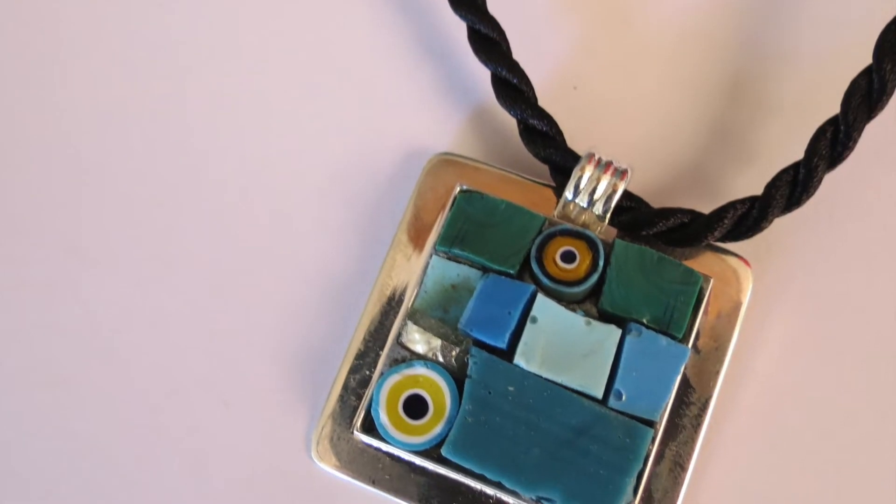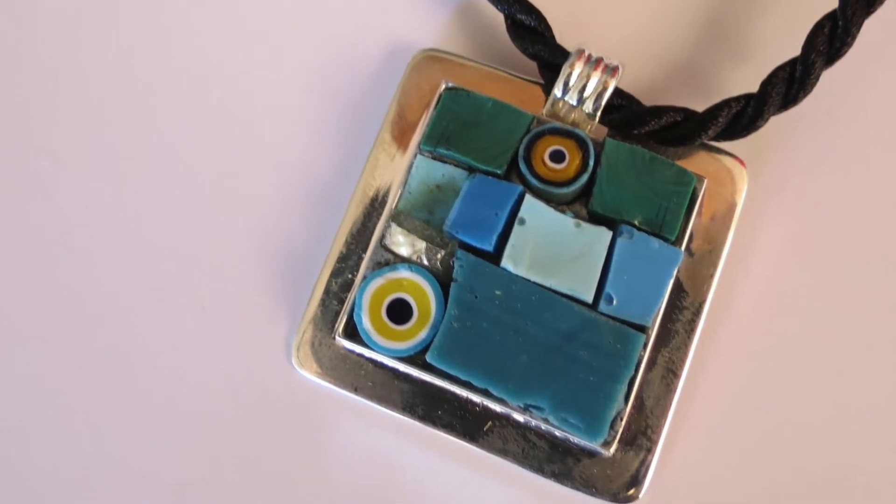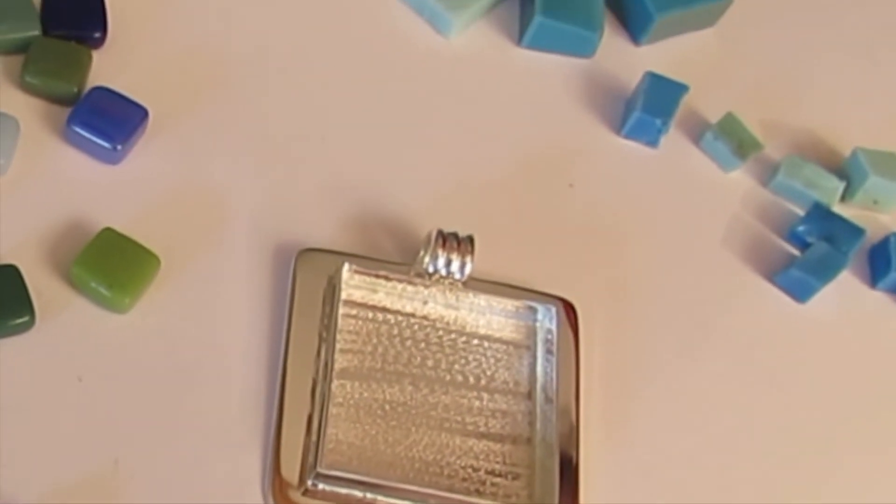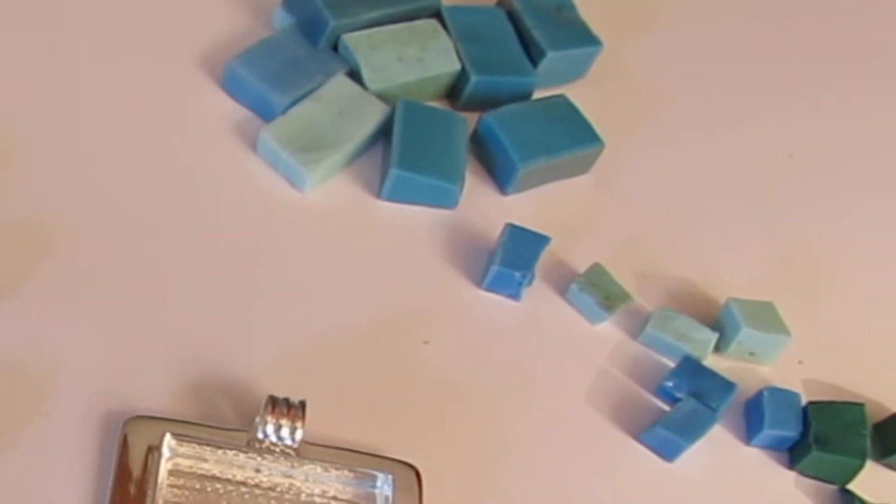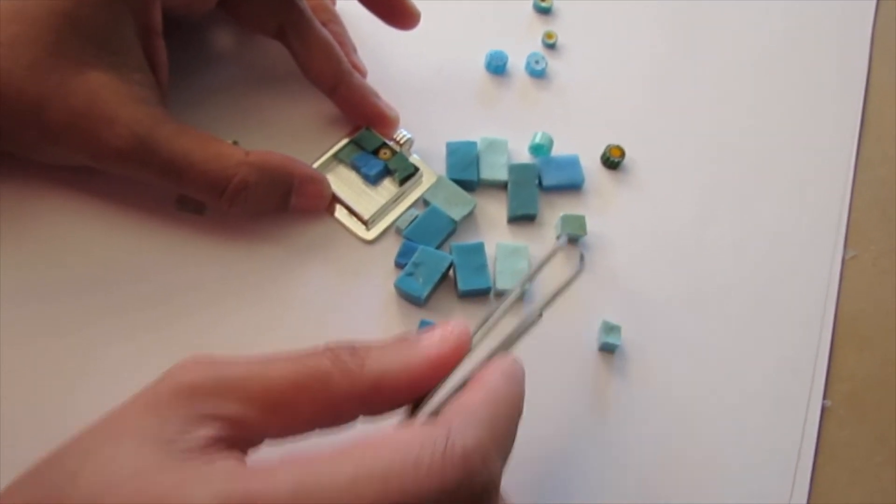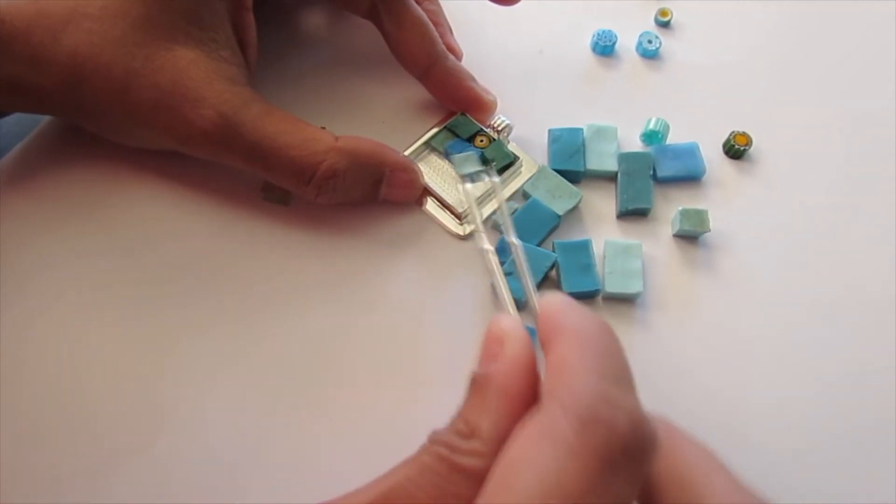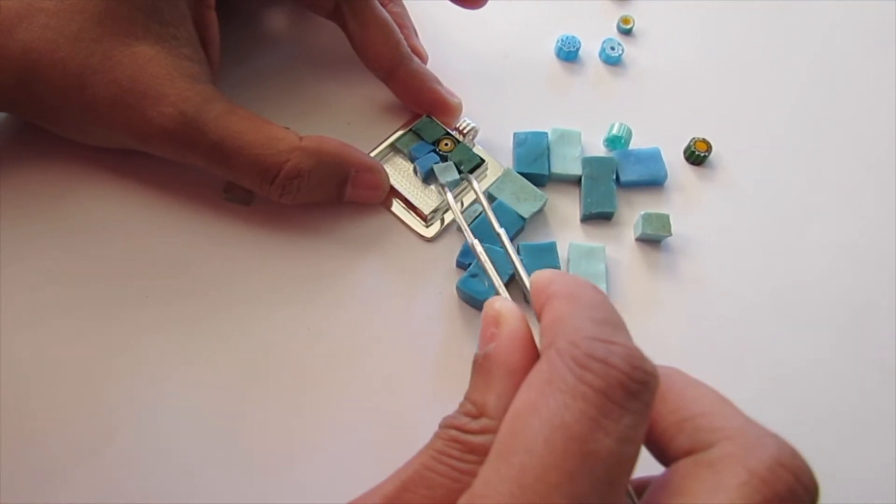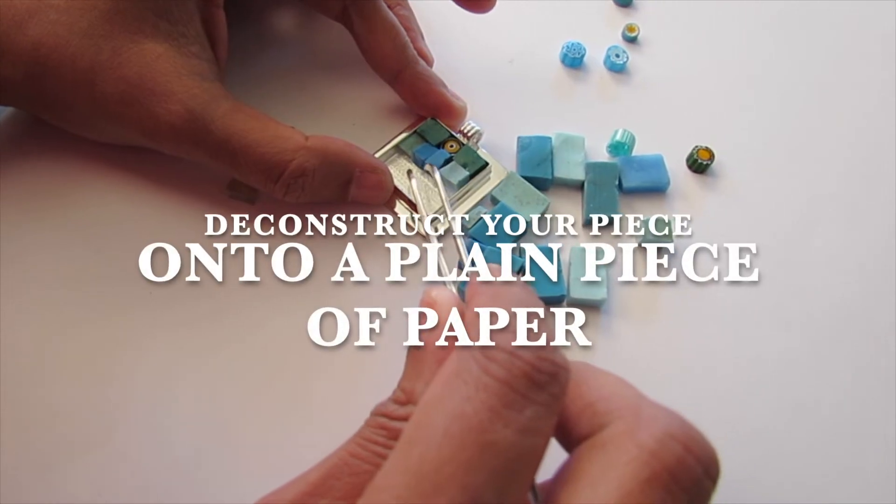Now let's make a pendant using thicker materials. This pendant is made with a touch of smalty and some millefiori. Since this pendant will have just a few pieces, I am fitting them directly into the blank rather than using the contact paper method.